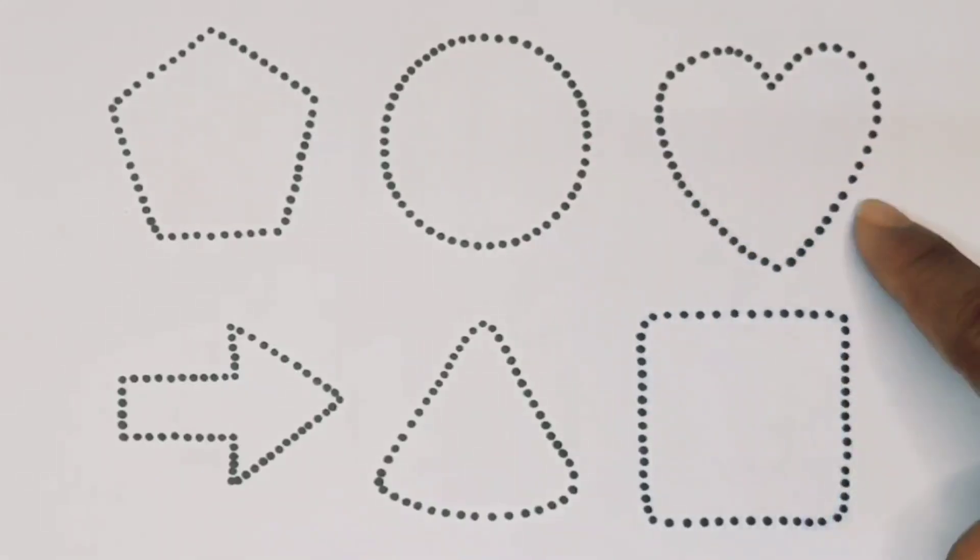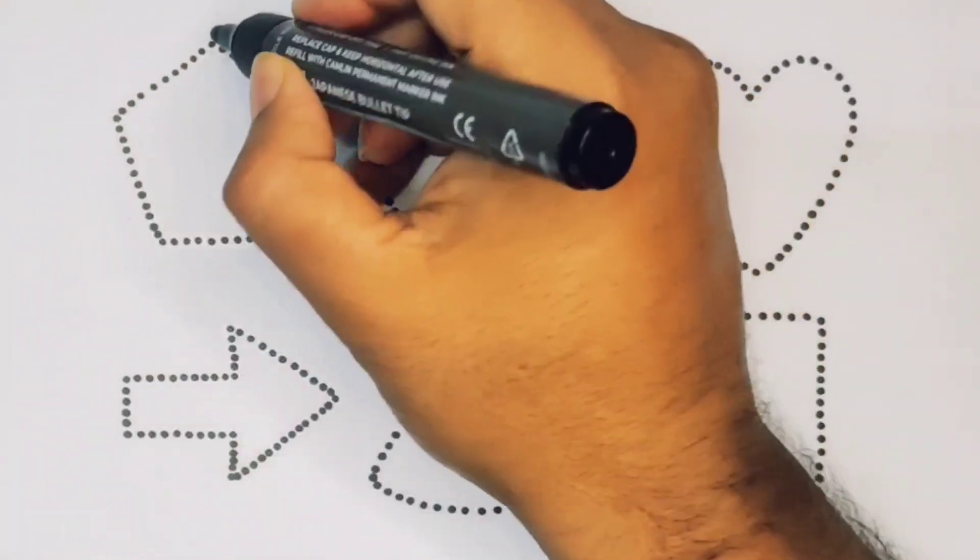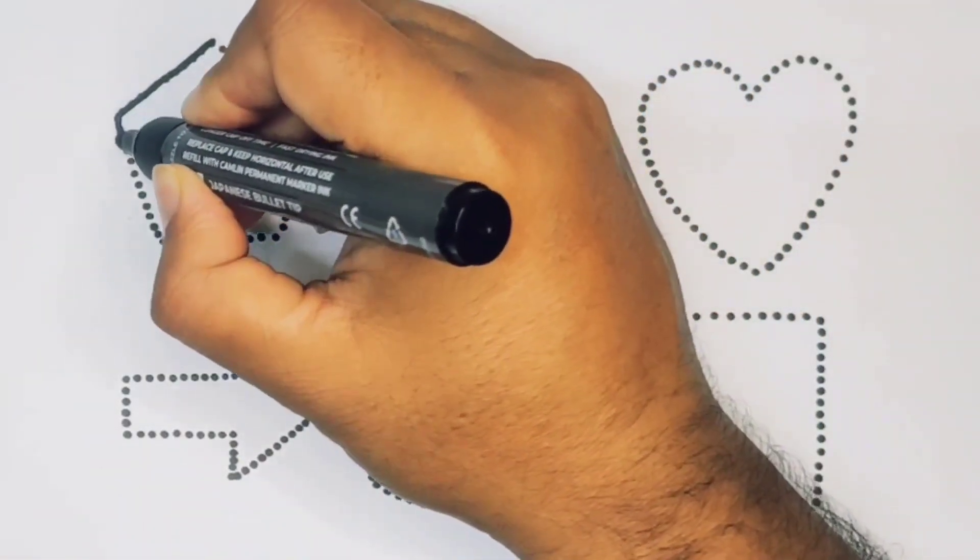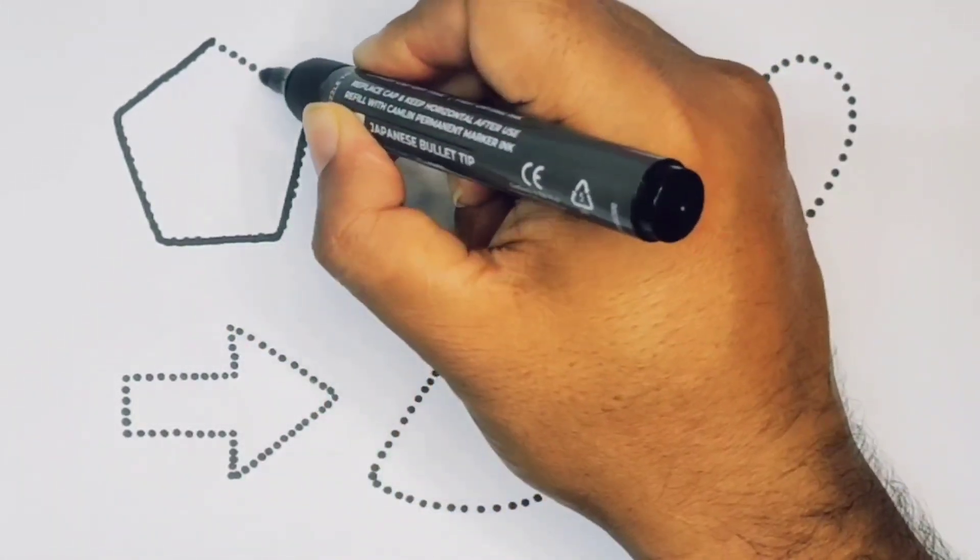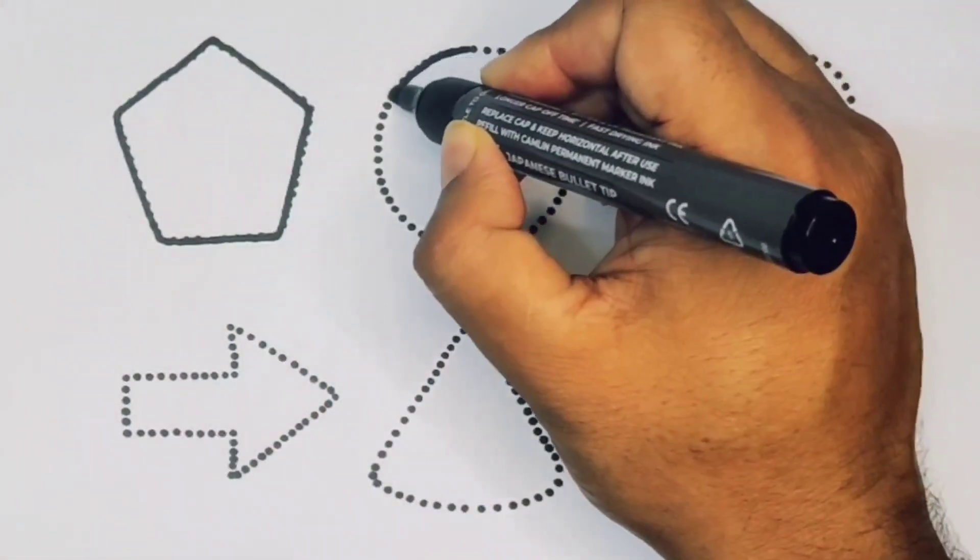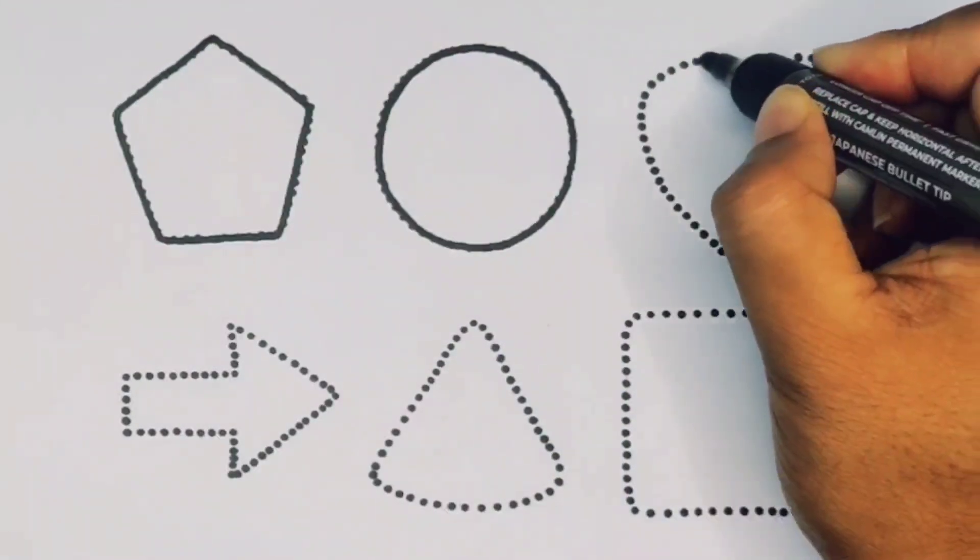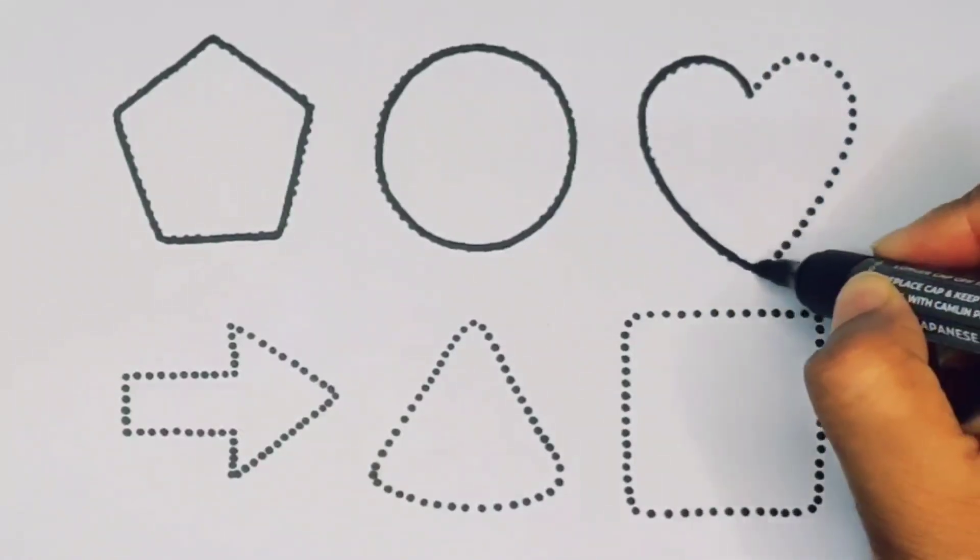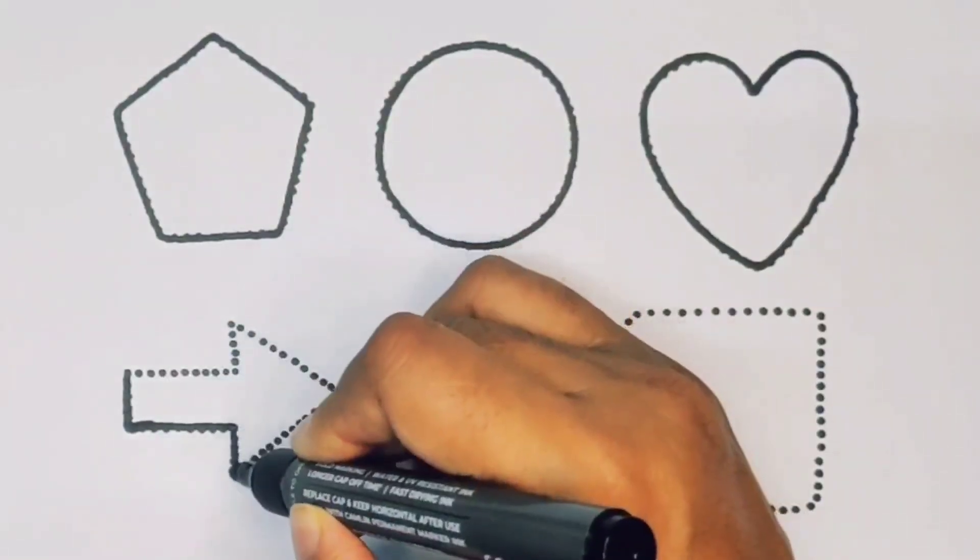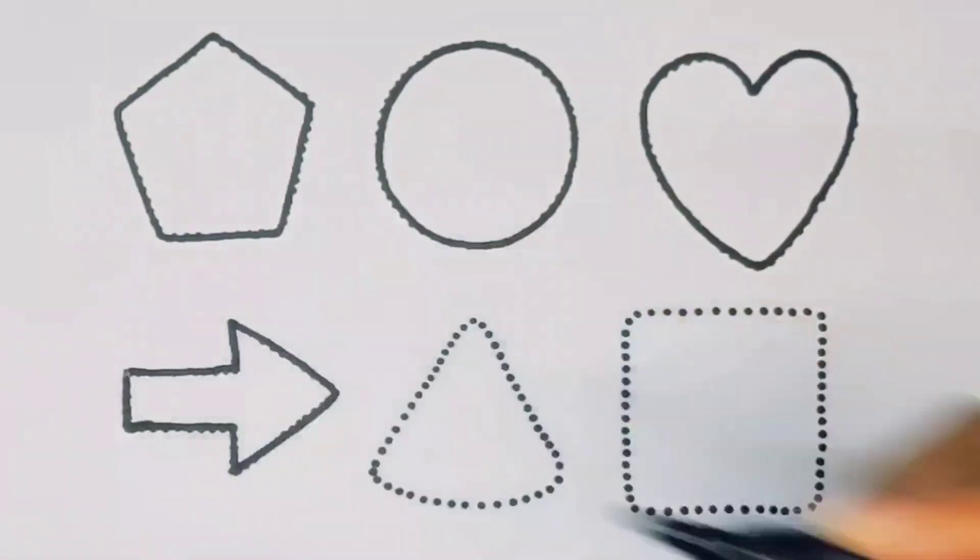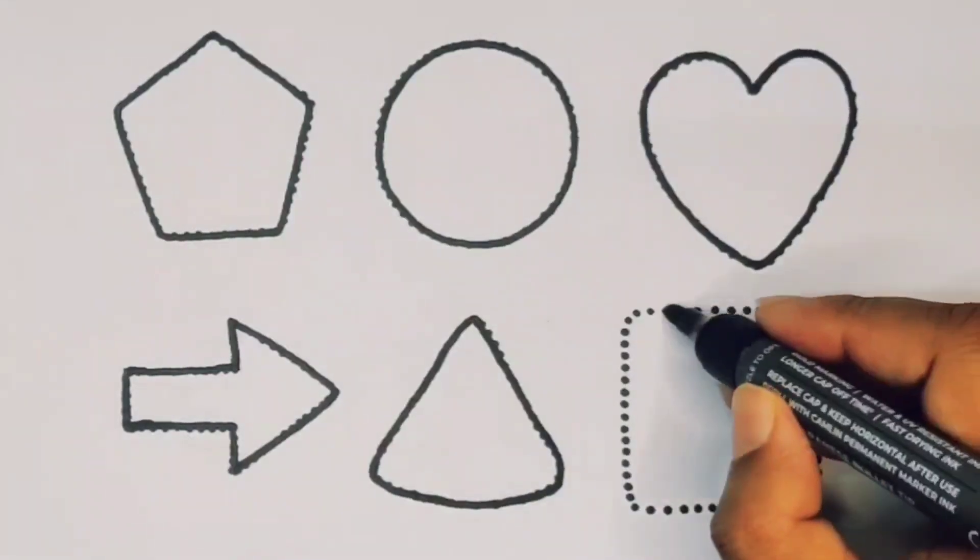Circle, heart, arrow, triangle, and square. First, we're going to draw the shapes: pentagon, circle, heart, arrow, triangle, square.